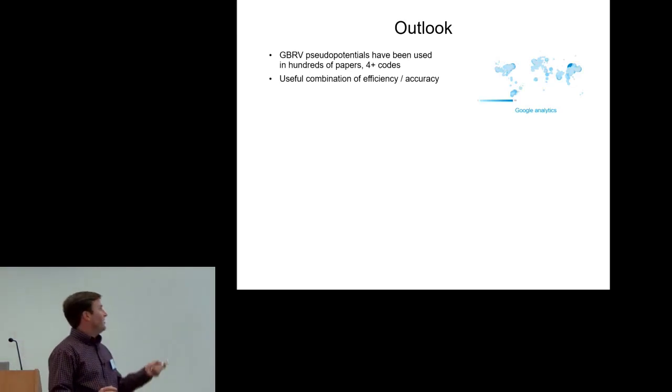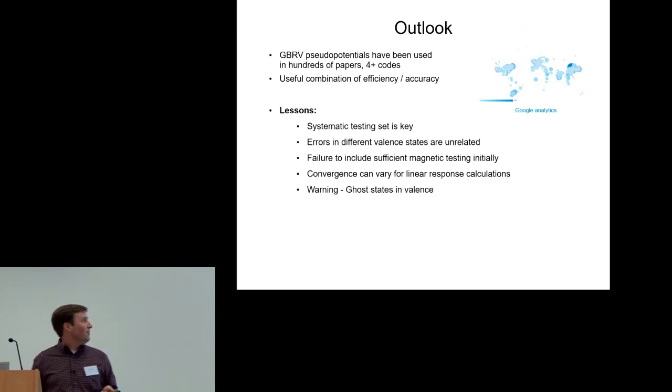In outlook, the GBRV pseudo potential library has been a useful contribution to the community. It's been used in a bunch of different papers. Some lessons I've learned: systematic testing is key to get robust results. Errors of different valence states are often unrelated and they need to be tested separately. Initially, I didn't include enough spin polarized testing. That's something I'm still working on.